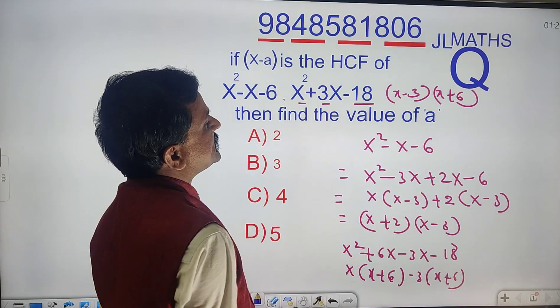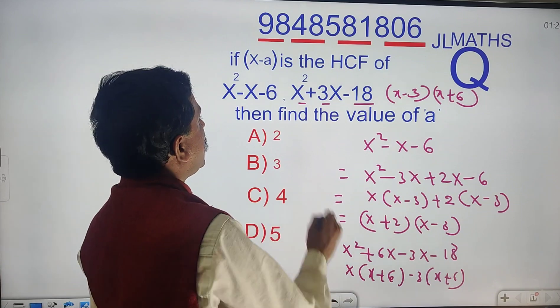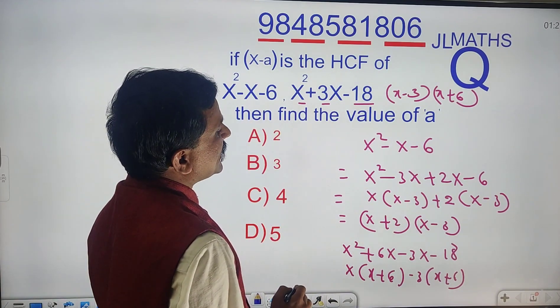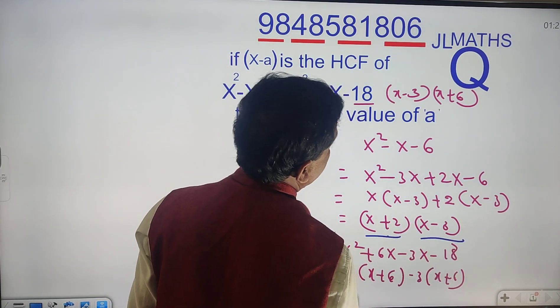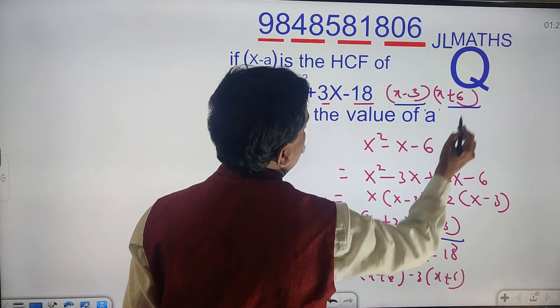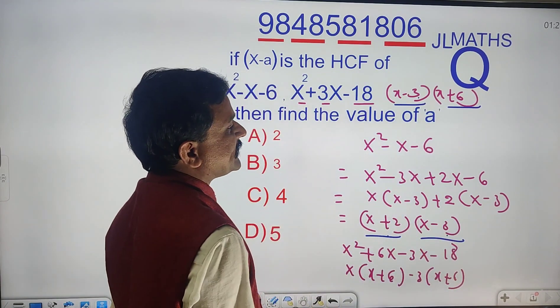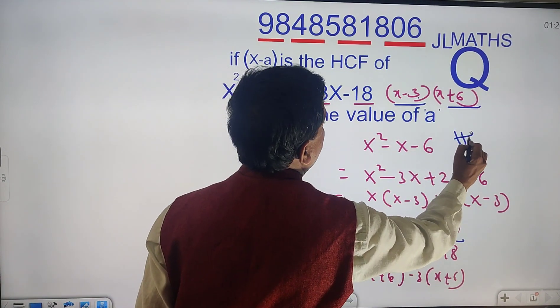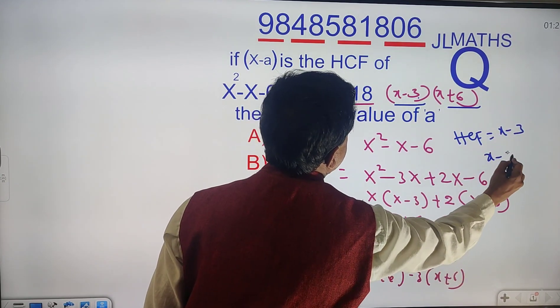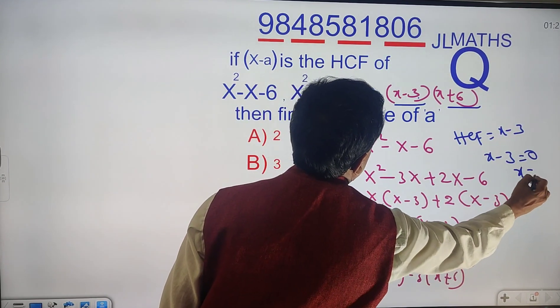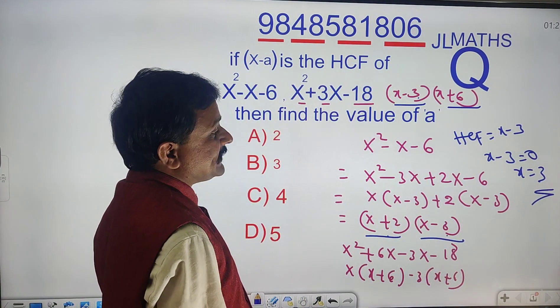x square plus 3x minus 18 can be written as x plus 6 times x minus 3. x square minus x minus 6 can be written as x plus 2 into x minus 3. The common factor is x minus 3, so x minus 3 equals 0, x is equal to 3. Then we get the answer is 3.